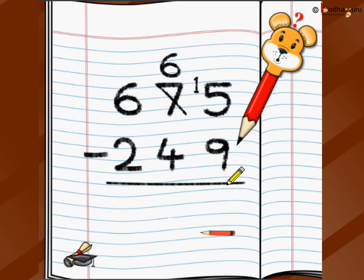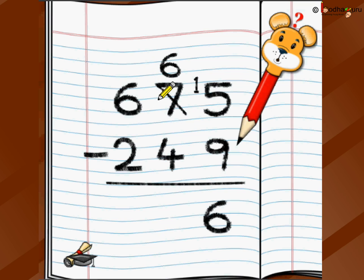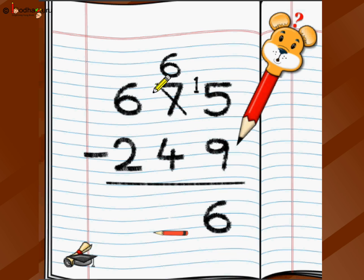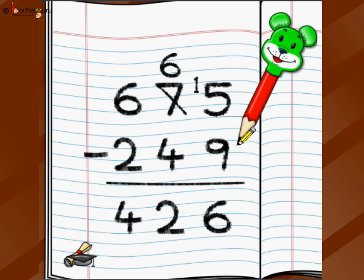From 15 you can remove 9: 15 minus 9 is 6. Now move to the tens position — don't use 7 anymore, use the new value 6. So 6 minus 4 is 2. Then move to the hundreds: 6 minus 2 is 4. The answer is 426. So 675 minus 249 equals 426.